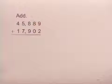In this problem, we'll add whole numbers. We'll add 45,889 plus 17,902.